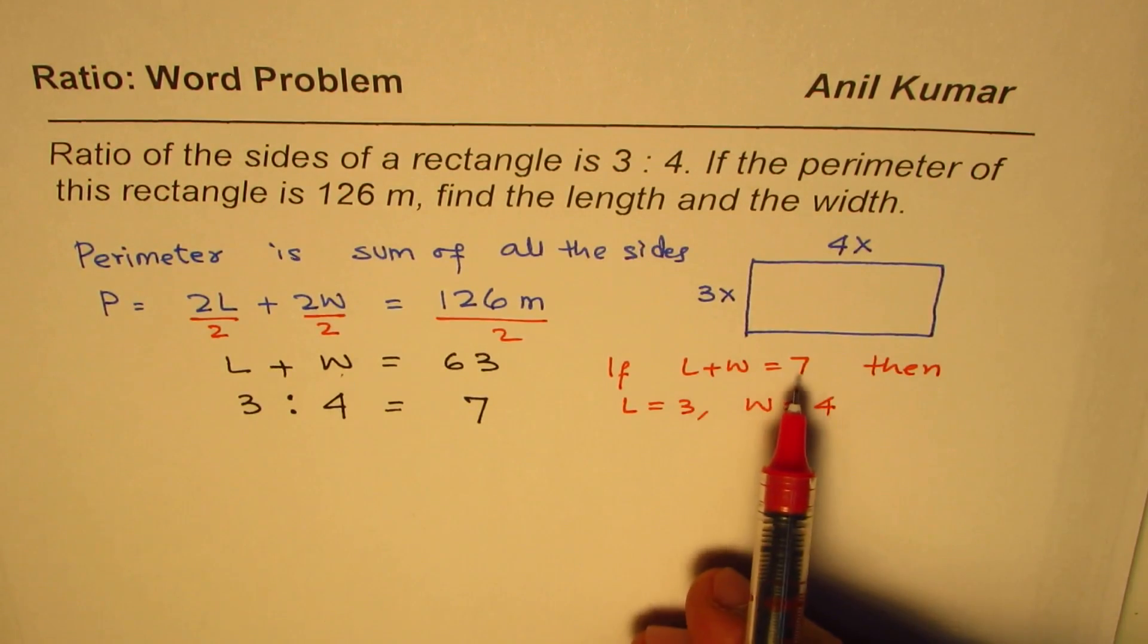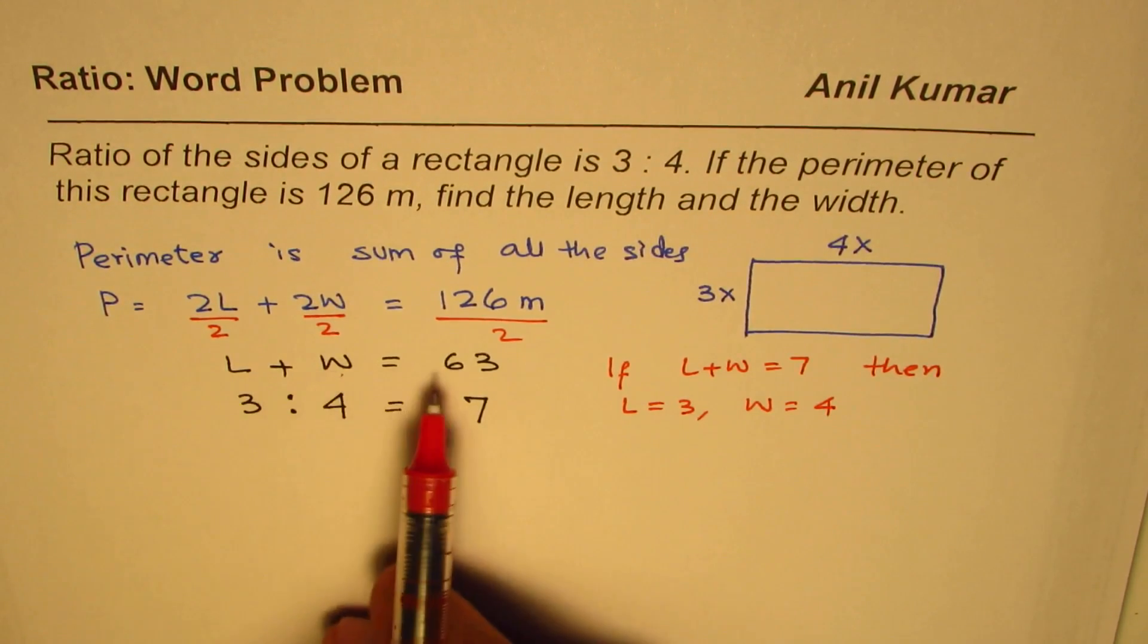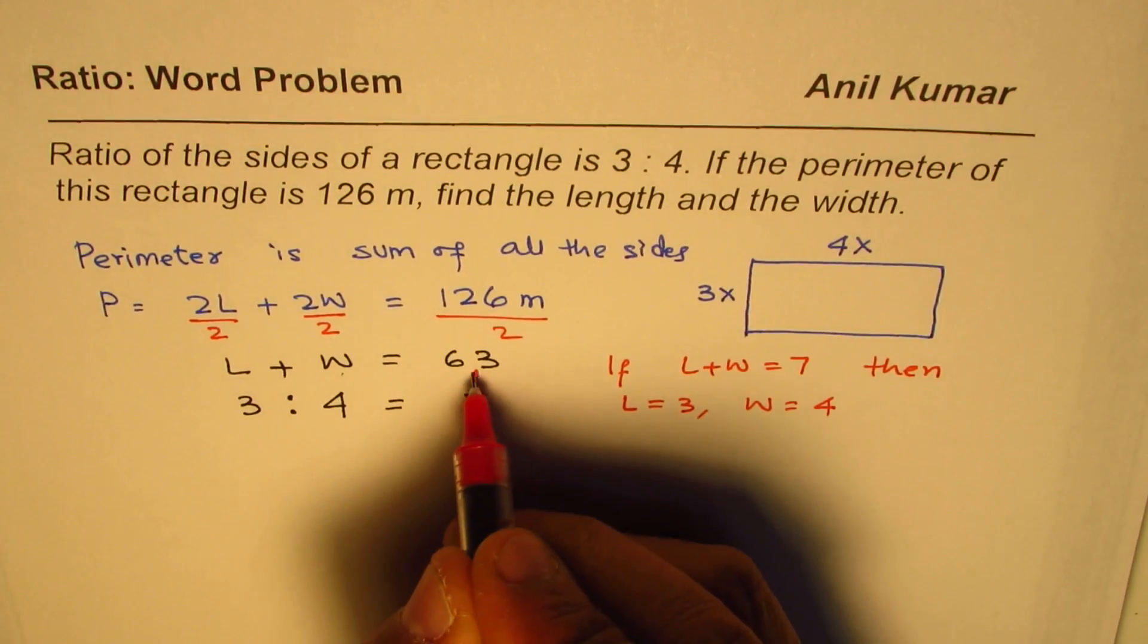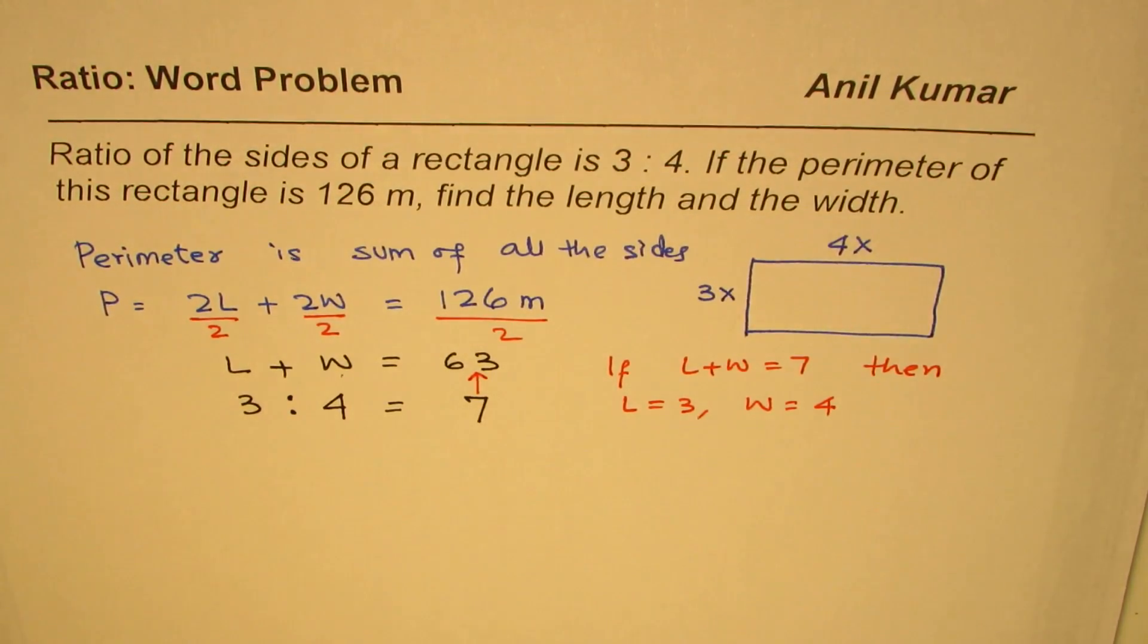In our case, what do we have? We have length plus width as 63. Now, how is 63 related with 7? This is what we have to find. So we have to find relation between 7 and 63.